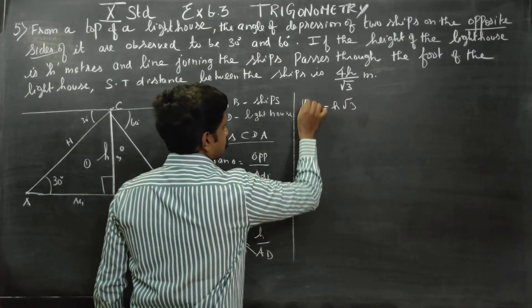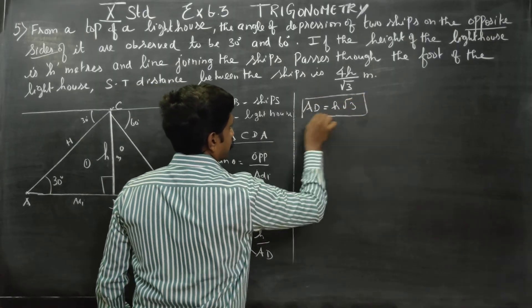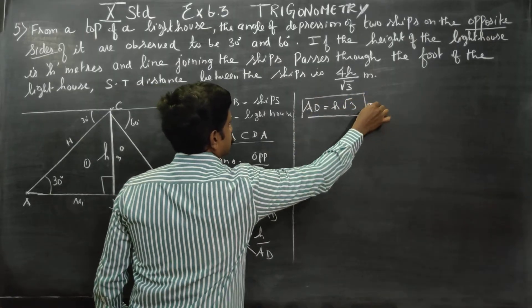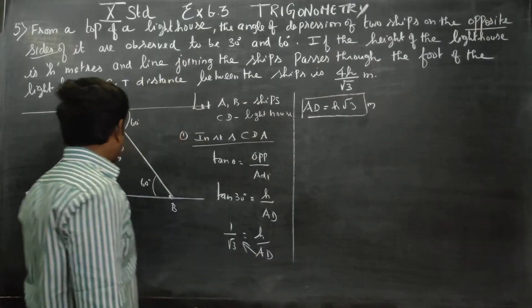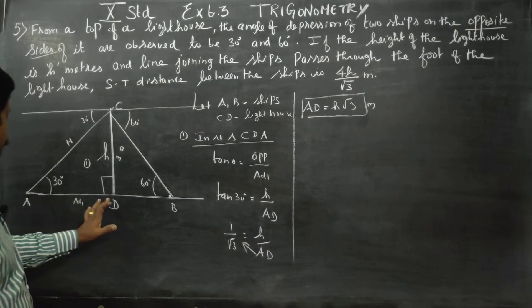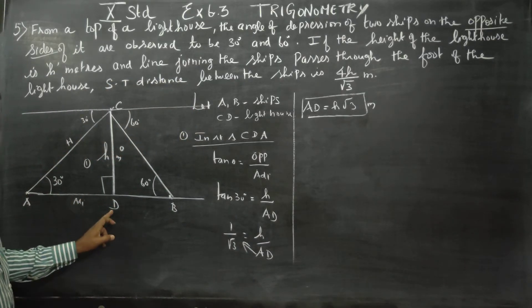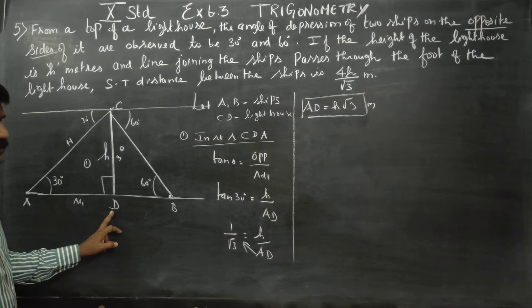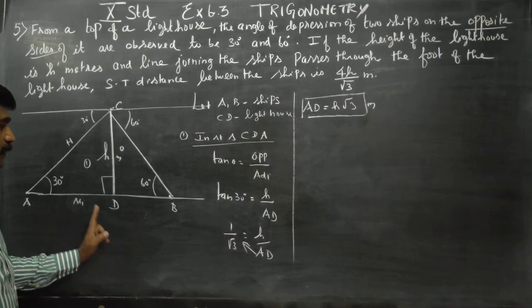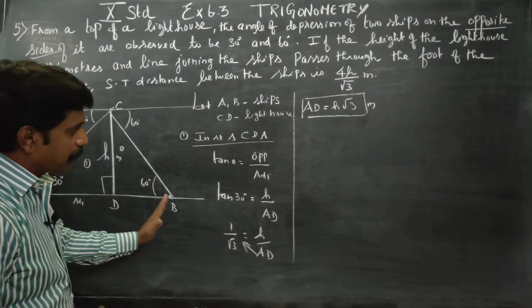The first answer is ready. AD is established in meters. The first ship's distance from the lighthouse (AD) is solved — that's the first part.